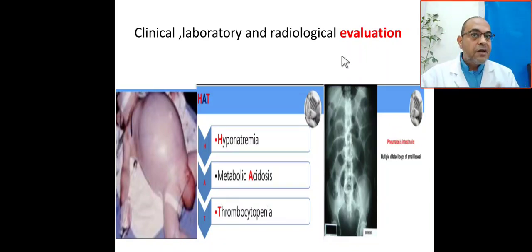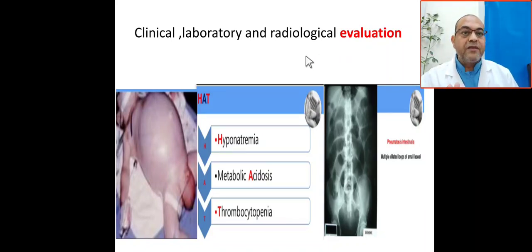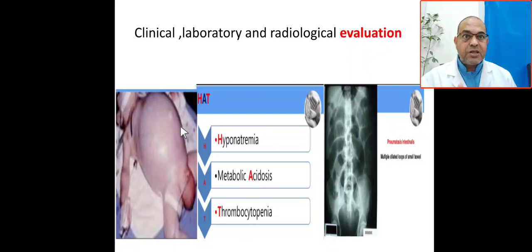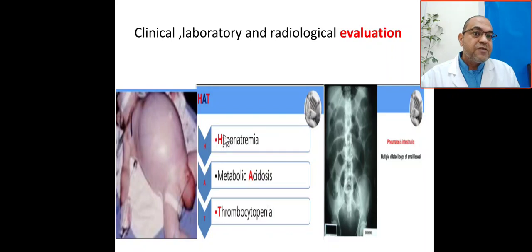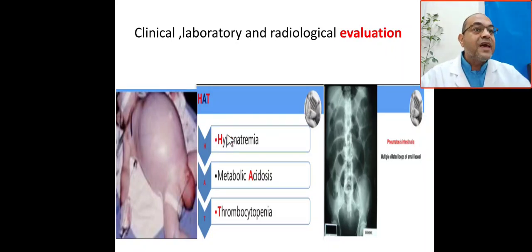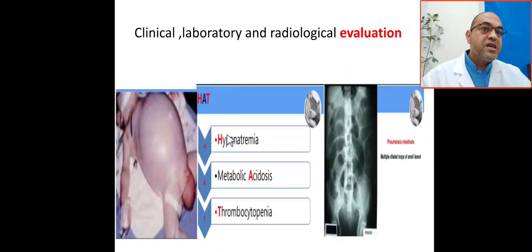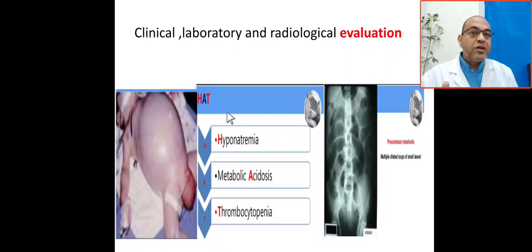Assessment of this patient involves clinical, laboratory, and radiological evaluation. Clinically, the patient presents with abdominal distension, bilious aspirate, not passing stool, and feeding intolerance. This is the clinical picture of necrotizing enterocolitis in premature babies. It is the most common GI medical emergency in the NICU.